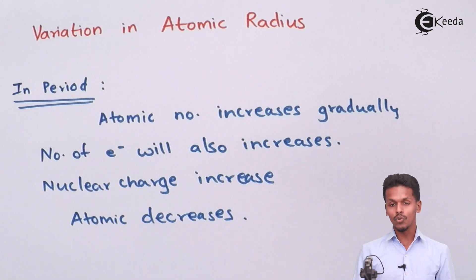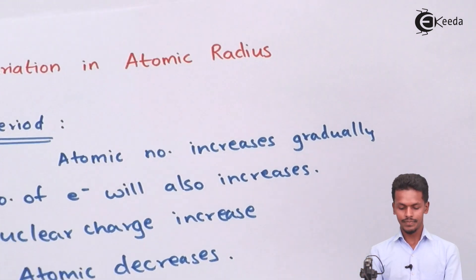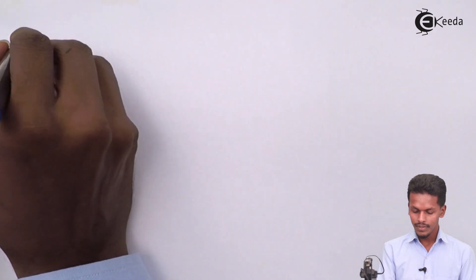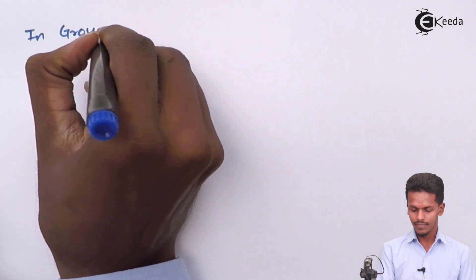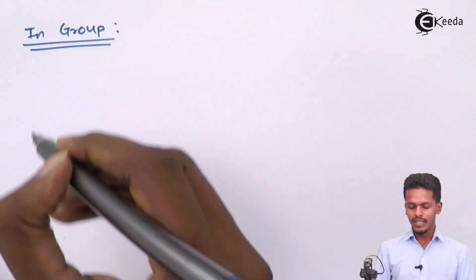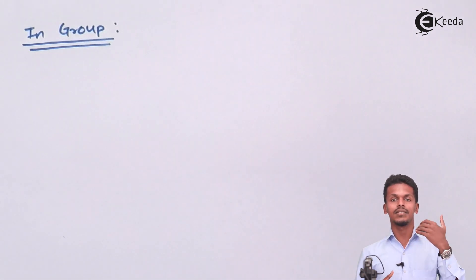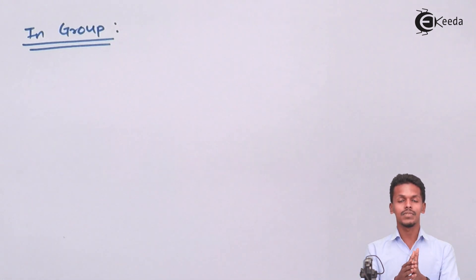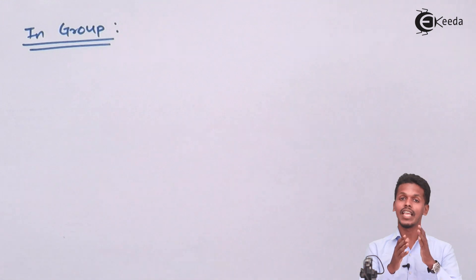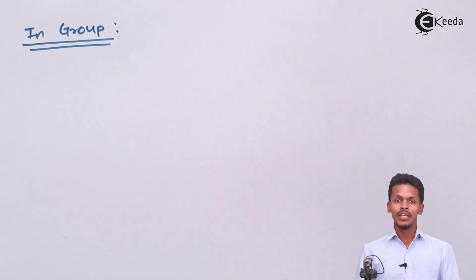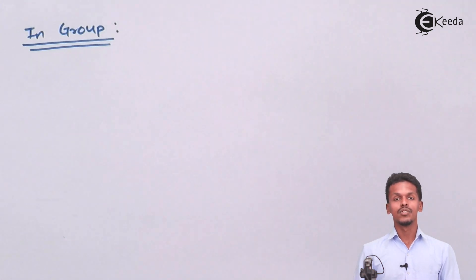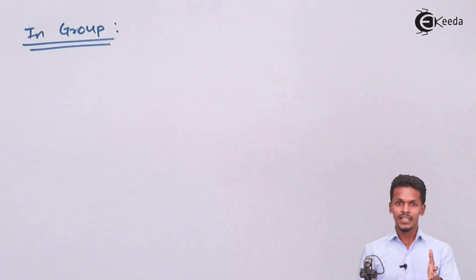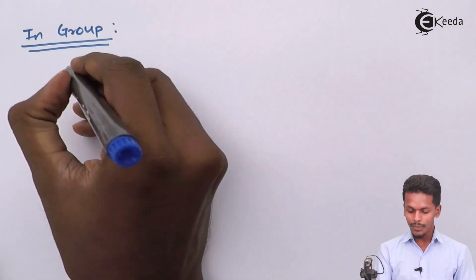Now let us talk about what will happen in a group. A group is a vertical column, and the elements are arranged in such a manner that they have similar properties. Talking about the first group, which consists of lithium, sodium, potassium and all.